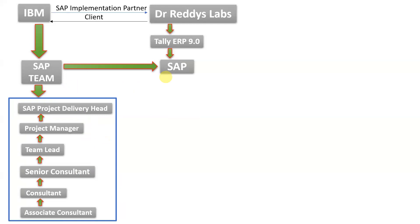Now, a very important and interesting point: how will the SAP team come to know about Dr. Redis Labs? Without information, how will the SAP team design the SAP application for Dr. Redis? The SAP team needs to have proper end-to-end information — starting to ending, phase-wise and level-wise — they need to have information about the client's process.